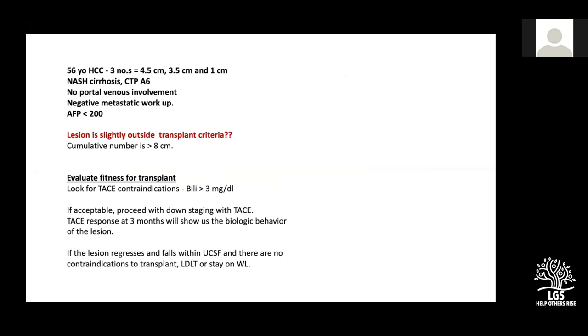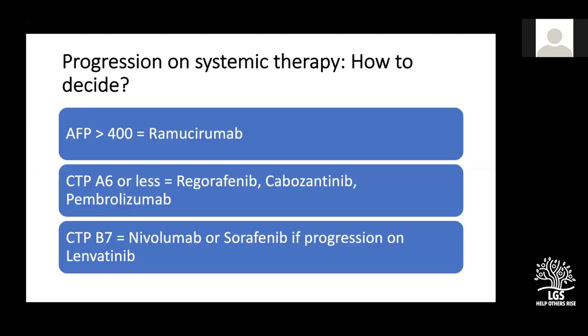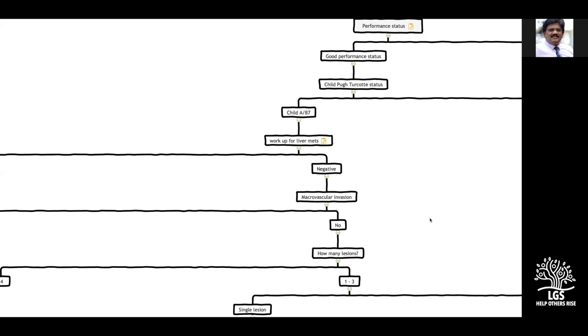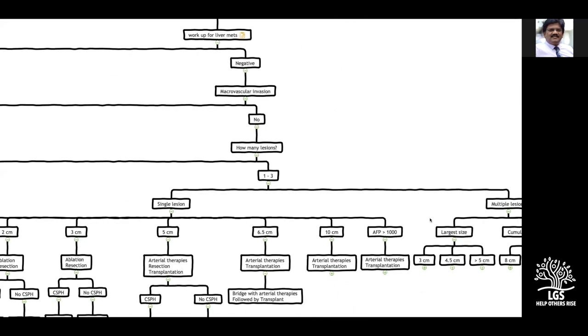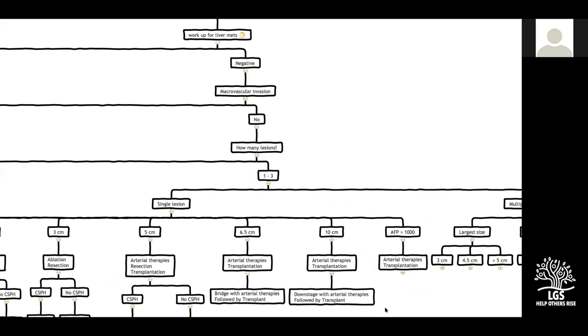If tumor SUV is 3.5 and lymph node SUV is 3 — never ignore these findings. Keep monitoring with follow-up images. If there is strong suspicion of a lymph node at time of transplant, take the lymph node and send for frozen section. If frozen section is positive, that constitutes extrahepatic disease and the transplant should not proceed. The audience question continues regarding positive lymph nodes in HCC and whether they are a contraindication for transplantation.